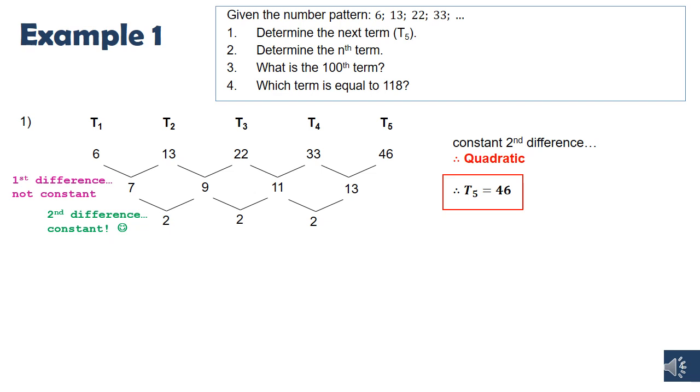The second question in this example asks us to determine the nth term. So remember, this could also be asked for as the general rule, or the formula, or the general term. They're basically looking for the equation. And I already gave you that the Tn of a quadratic equation is given in the form an squared plus bn plus c. And we have to work out what a, b, and c are.